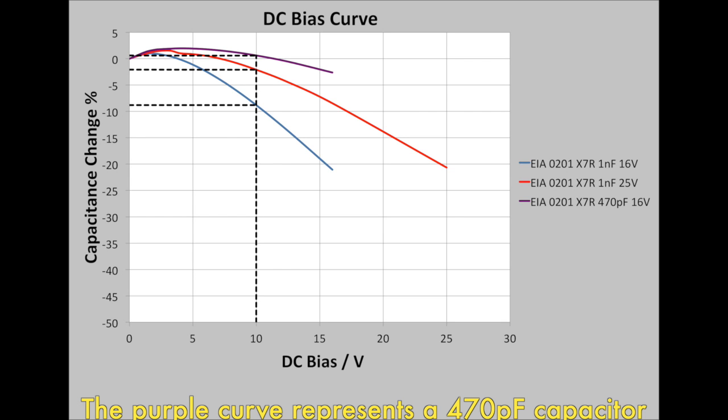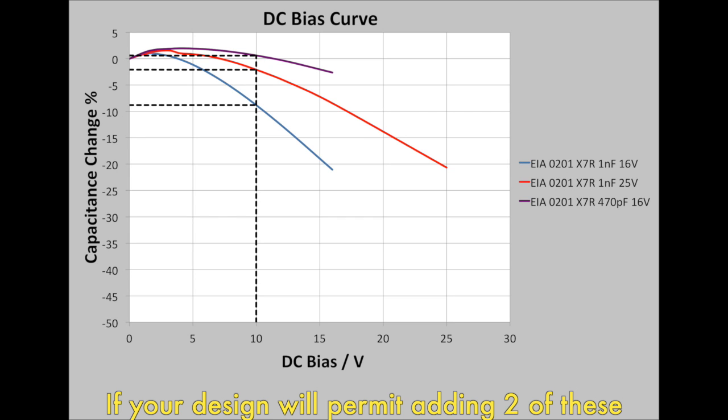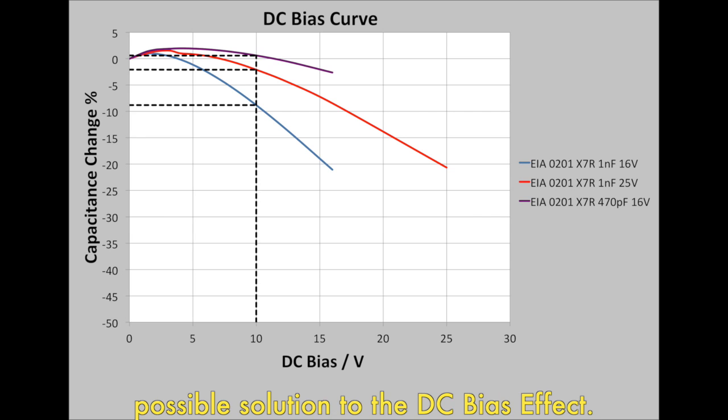The purple curve represents a 470 picofarad capacitor in the same case size. At 10 volts the capacitance change is only 0.6 percent. If your design will permit adding two of these capacitors in parallel, this could be a possible solution to the DC bias effect. Lower capacitance values in ceramic capacitors have thicker dielectric layers.